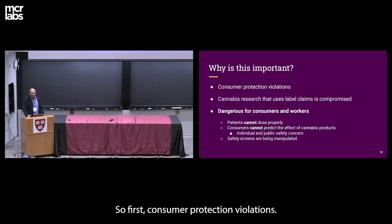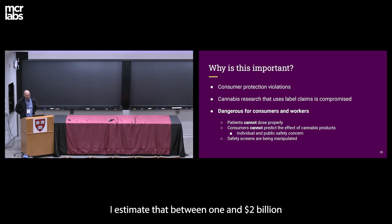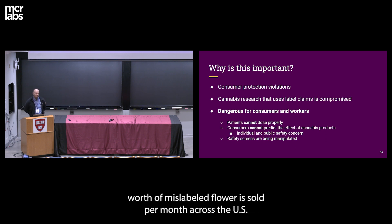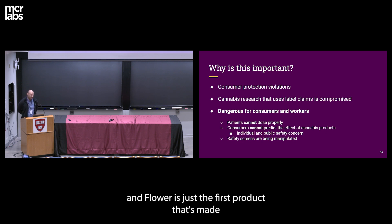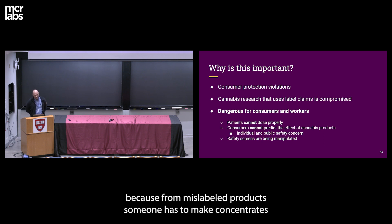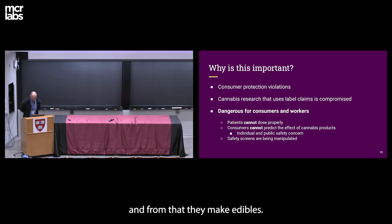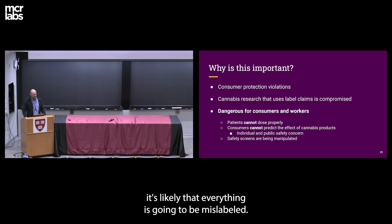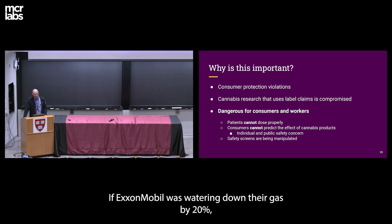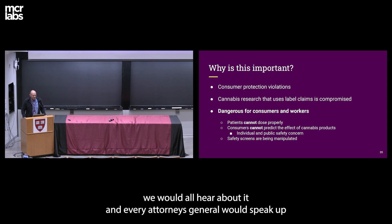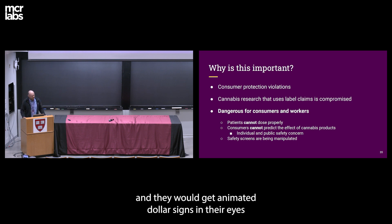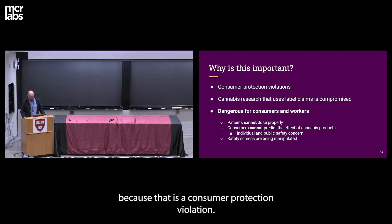Why is this important? First, consumer protection violations. I estimate between $1 and $2 billion worth of mislabeled flower is sold per month across the U.S. And flower is just the first product — from mislabeled flower, someone makes concentrates, then edibles. If you start with a mislabeled product, everything downstream is likely mislabeled too. If ExxonMobil was watering down their gas by 20%, every attorney general would speak up — this is a consumer protection violation.